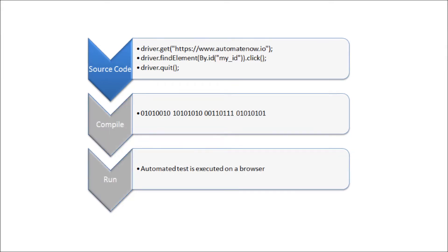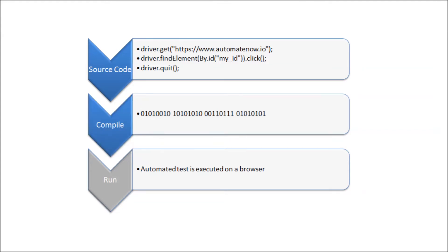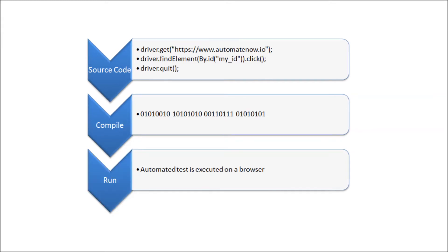First, we must write the instructions using a programming language of our choice. These instructions are known as the source code. This source code must then be compiled into machine code, also known as object code. This is nothing but ones and zeros that the computer can understand. Once this is done, then we can execute our test on a browser.